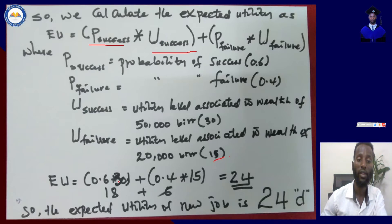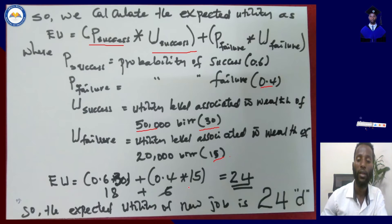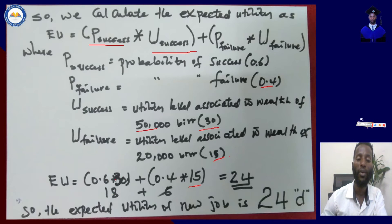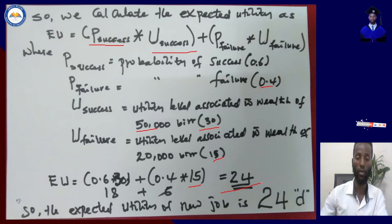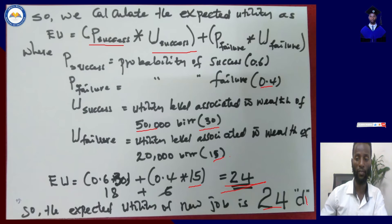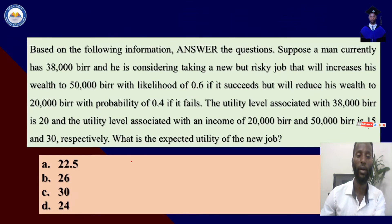We have p(success) at 0.6 and u(success) at 30 for 50,000, so 0.6 times 30, plus 0.4 which is the probability of failure, times the utility level associated with wealth of 20,000 which is 15. When we multiply 0.6 by 30 we get 18, and when we multiply 0.4 by 15 we get 6, and when we sum these values we get 24. Therefore the expected utility of the new job is 24, and the correct answer is D.